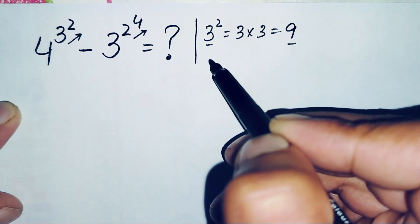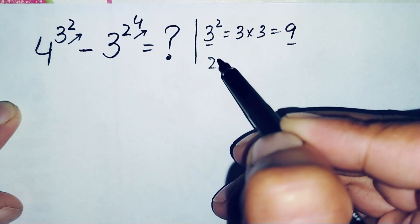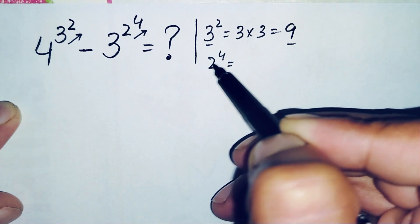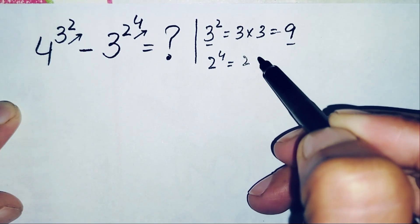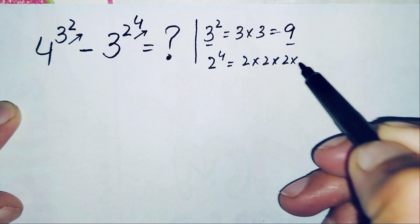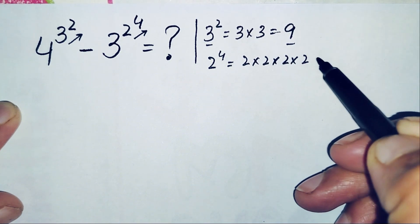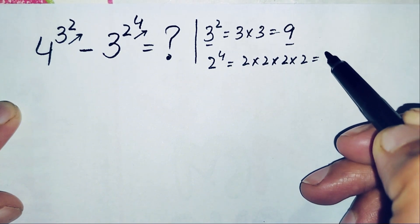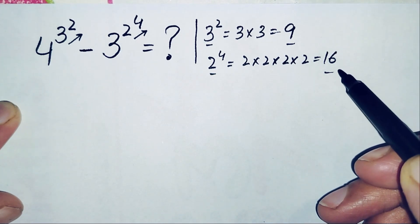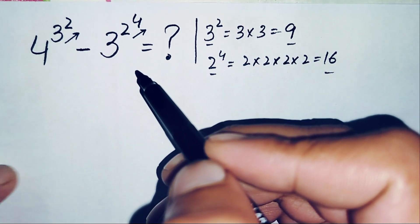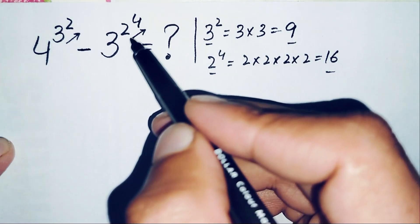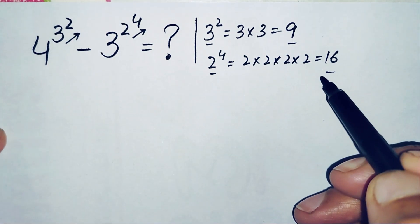Now what is the value of 2 raised to power 4? So 2 raised to power 4 means we need to multiply 2 four times: 2 times 2 is 4, 4 times 2 is 8, 8 times 2 is 16. So 2 raised to power 4 is 16. Now we will replace 3 raised to power 2 with 9 and 2 raised to power 4 with 16.